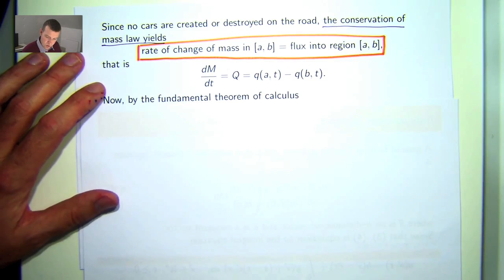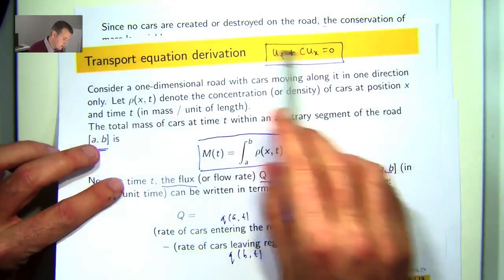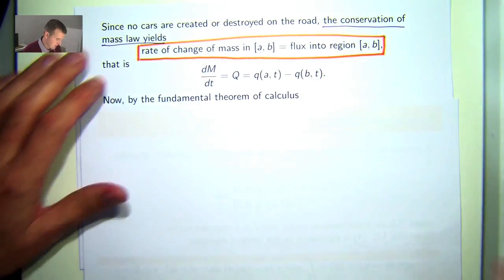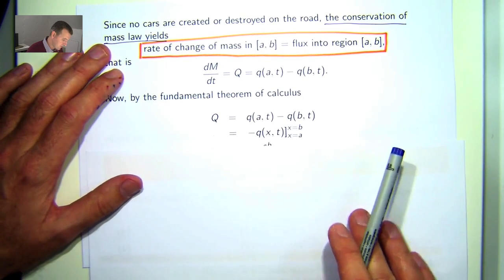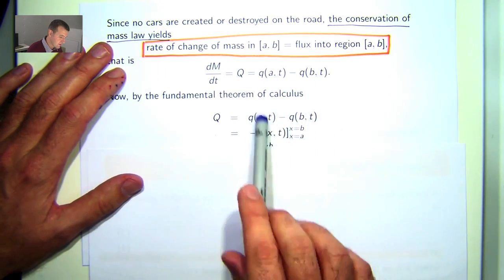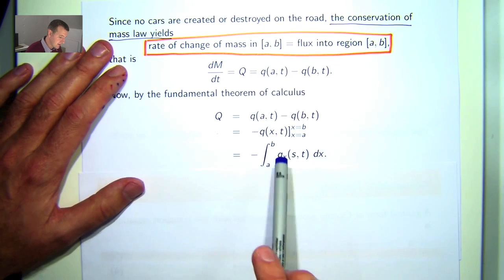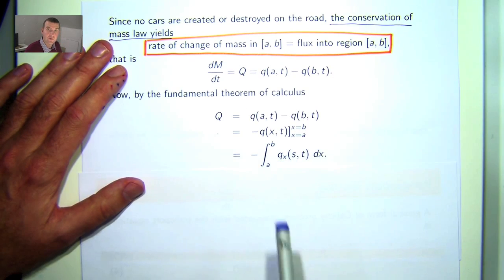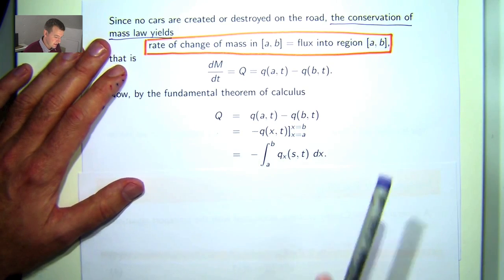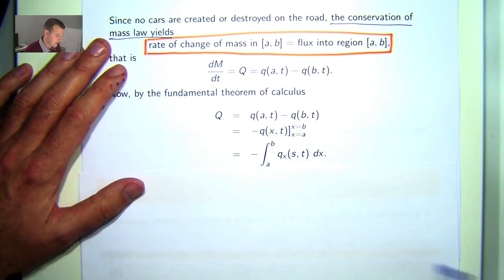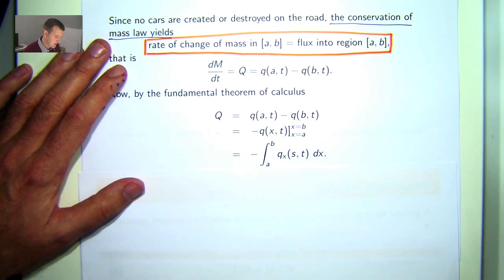So how do we come up with this differential equation from this? Well, we can use the fundamental theorem of calculus and just work on this difference here. This difference can be written as the integral of a partial derivative. If you sort of run it backwards, you'll get to here.